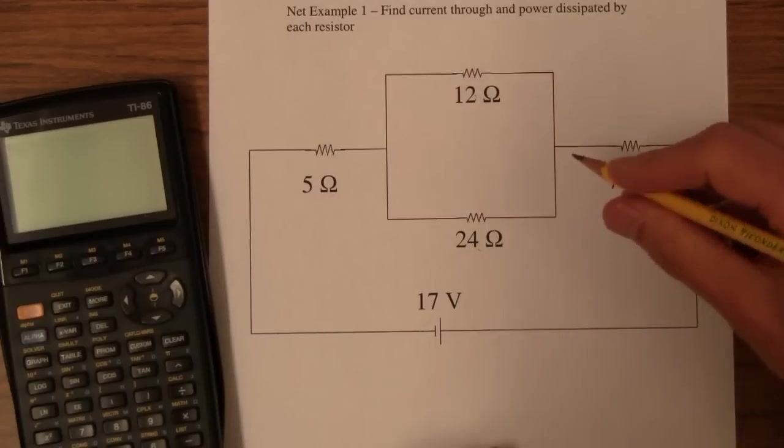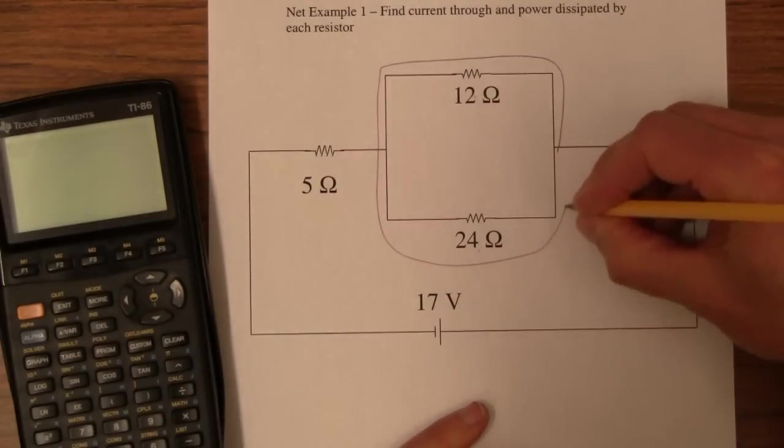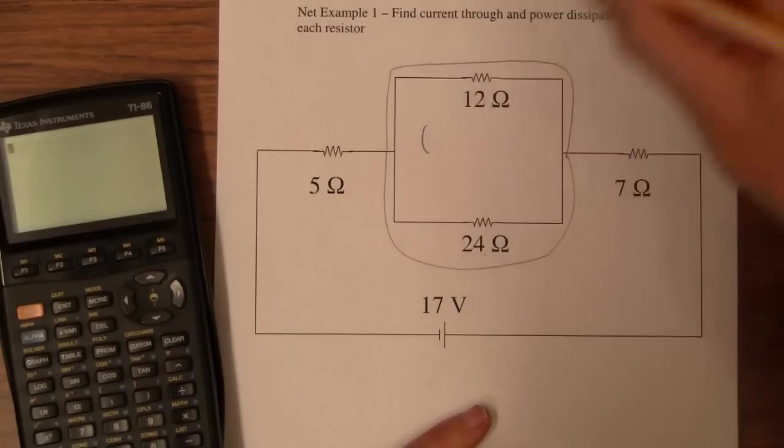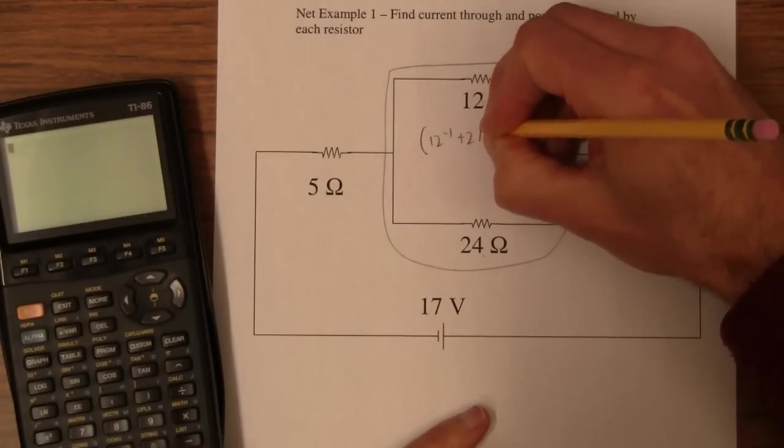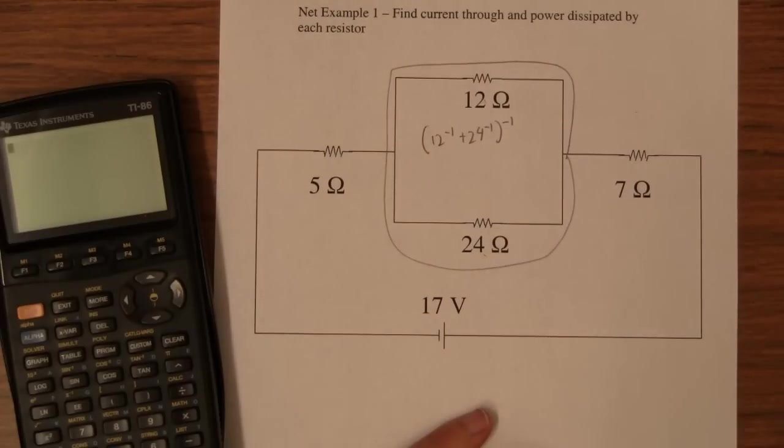So what I'm going to do here is circle this. These guys are in parallel, and the resistance of the circled part here is 12 to the minus 1 plus 24 to the minus 1 to the minus 1. The whole thing to the minus 1.